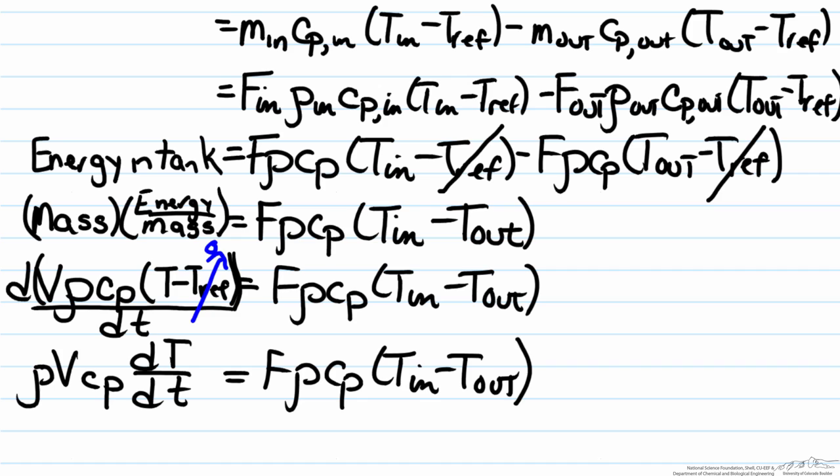There is one more thing to take into account: when we did our energy balance inside the tank, the temperature represents the temperature inside the tank. Since our system is well mixed, the temperature of the fluid inside the tank is the same as our outlet temperature. So we appropriately add the subscript, making it dT_out/dt.